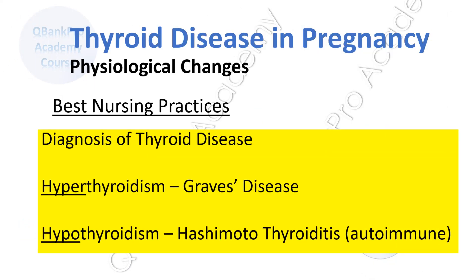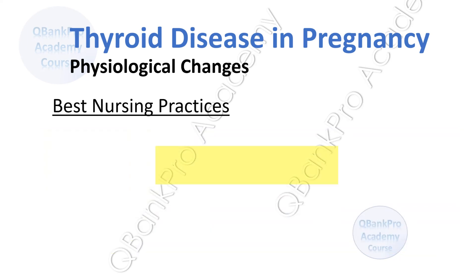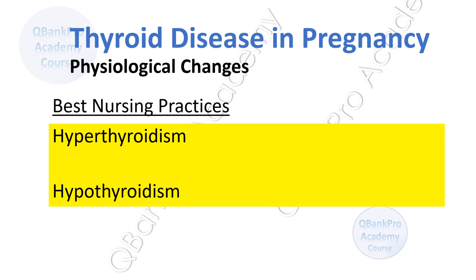There are a number of changes that occur in thyroid physiology during a normal pregnancy due to increased metabolic needs. Hyperthyroidism can complicate pregnancy; Graves' disease is one of the most common causes. The most common cause of hypothyroidism is Hashimoto's thyroiditis, or chronic autoimmune thyroiditis. Hyperthyroidism is indicated by a low TSH and elevated T4 and T3. In hypothyroidism, tests reveal a low T3, a low T4, and an elevated TSH.